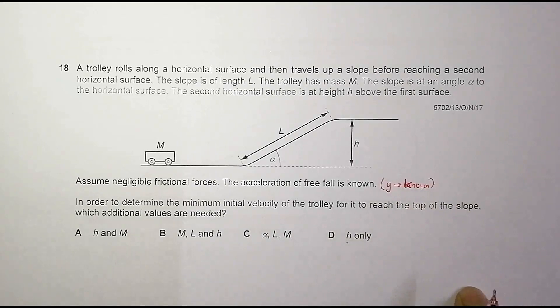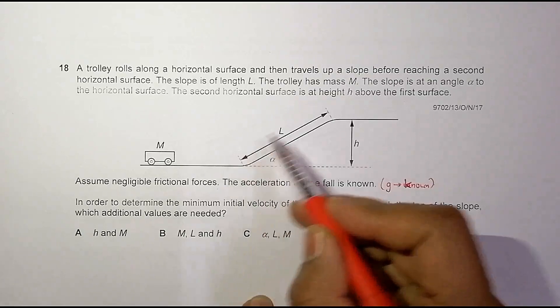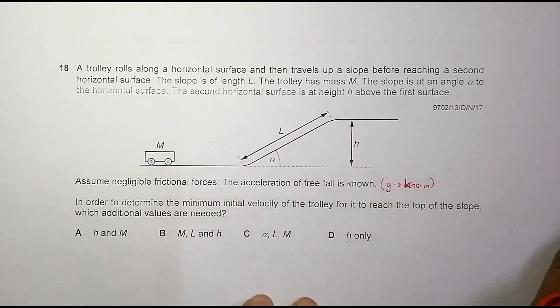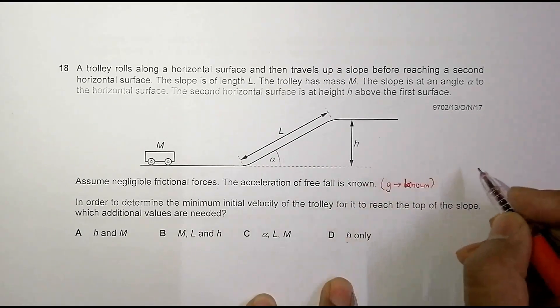In order to determine the minimum initial velocity of the trolley to reach the top of the slope, what additional values are needed? Since we have no friction, we just need to consider the action of gravity.